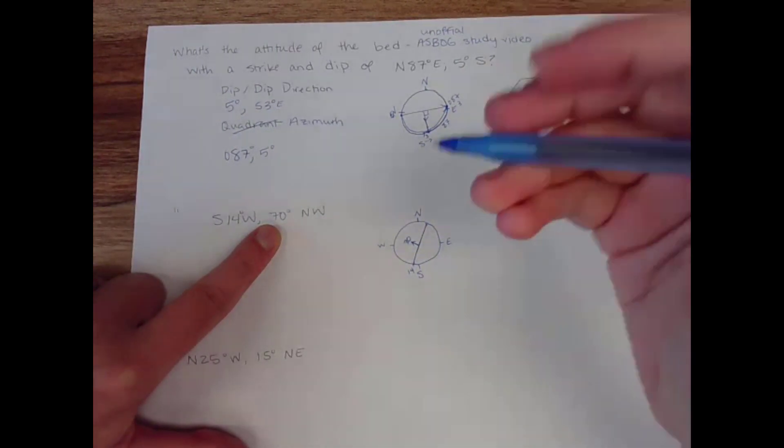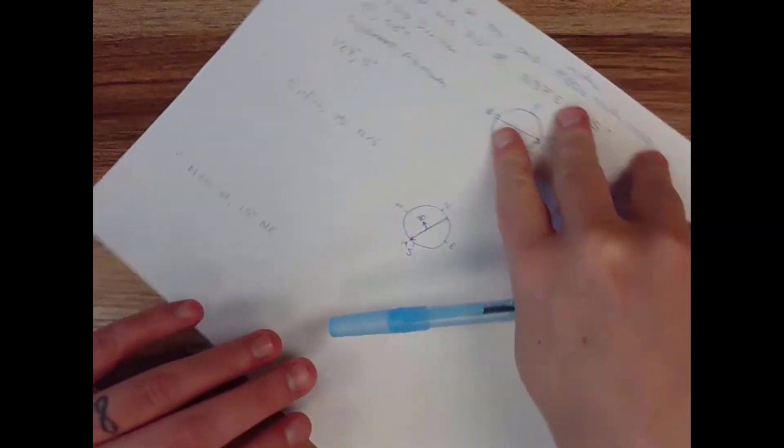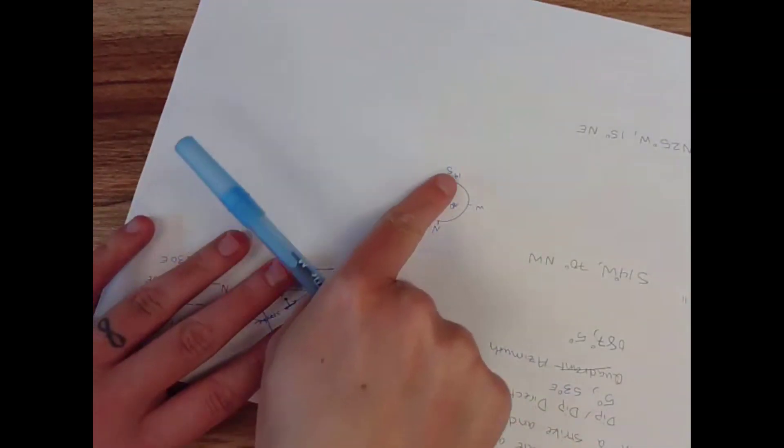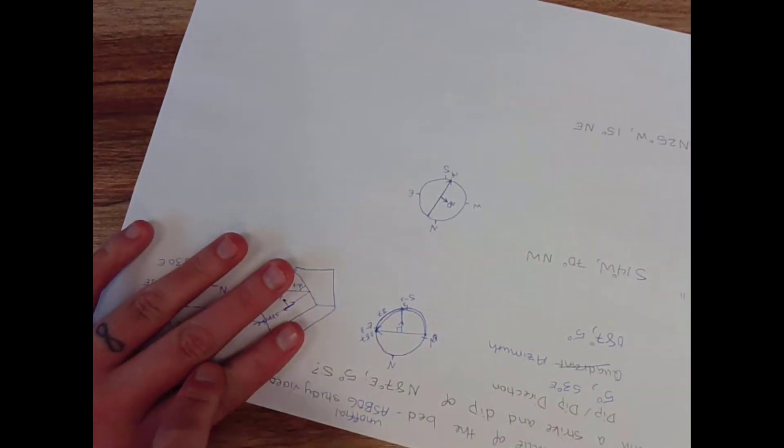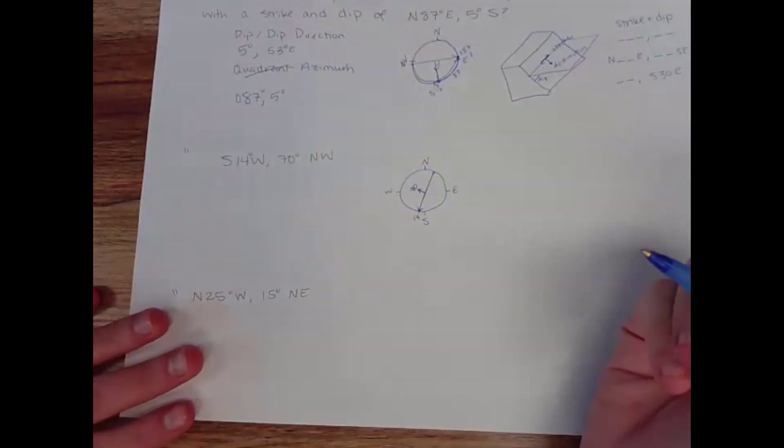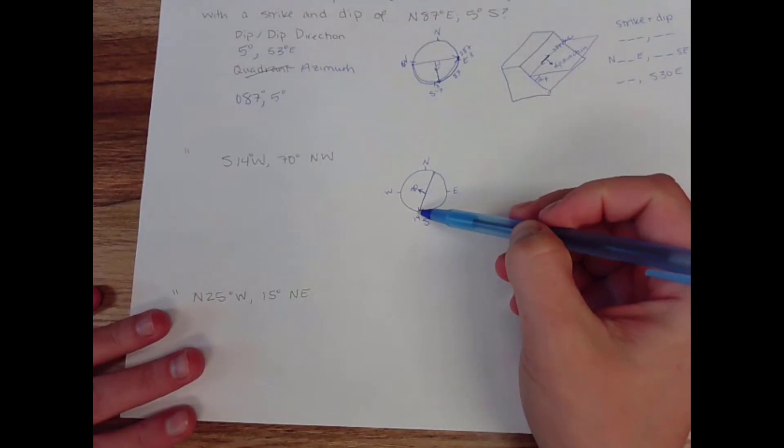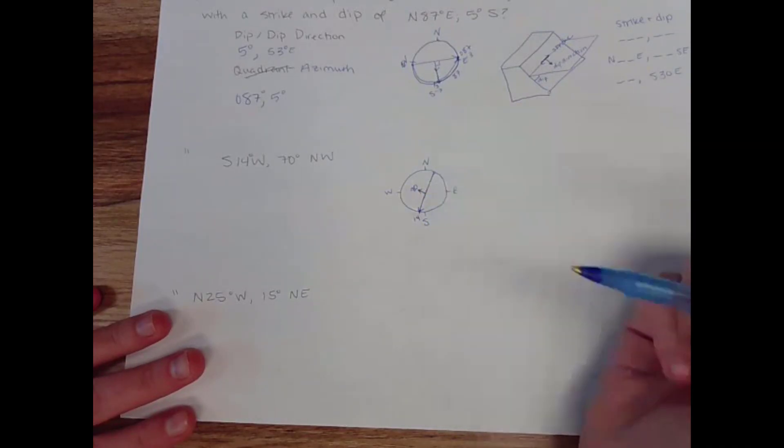Wait, does it? If I imagine looking to the southwest. Oh yeah, it does follow the right-hand rule. Sometimes I just write it out of habit. Okay. South 14 west, 70 degrees to the northwest is our dip.